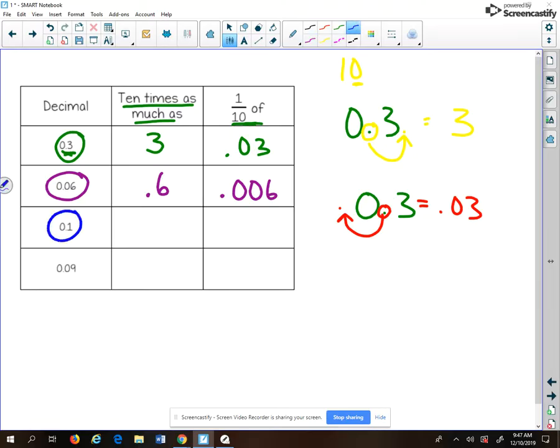For the third one down here, 1 tenth. 10 times as much, we're moving it one place to the right and we get 1. One-tenth of, it's getting smaller, we move it one place to the left and we get 0.01.